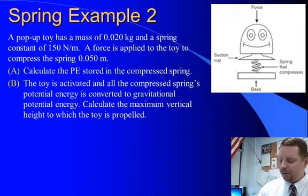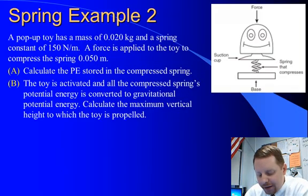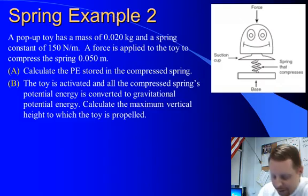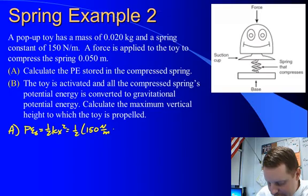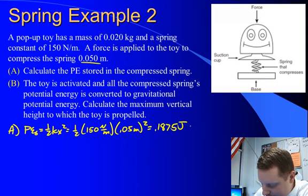Let's take a look at another spring example. A pop-up toy with a mass of 0.02 kilograms and a spring constant of 150 newtons per meter has a force applied to compress the spring to 0.050 meters. Calculate the potential energy stored in the compressed spring. The potential energy stored equals one-half kx squared, which is one-half times 150 newtons per meter times 0.05 meters squared, for a total of 0.1875 joules.